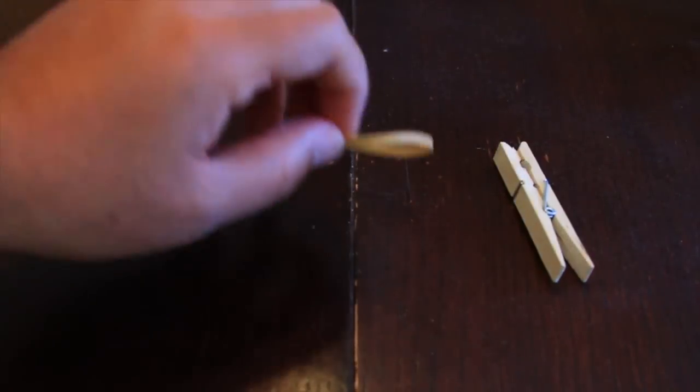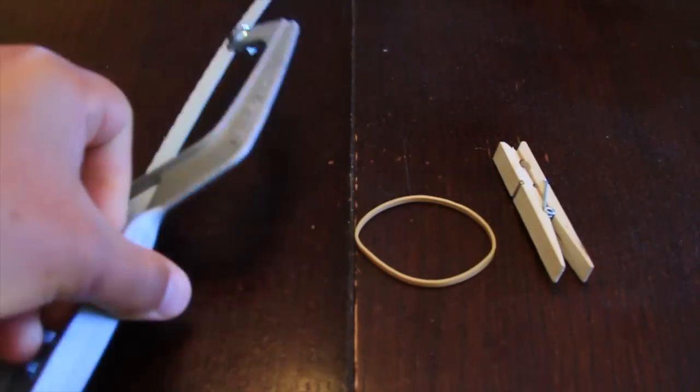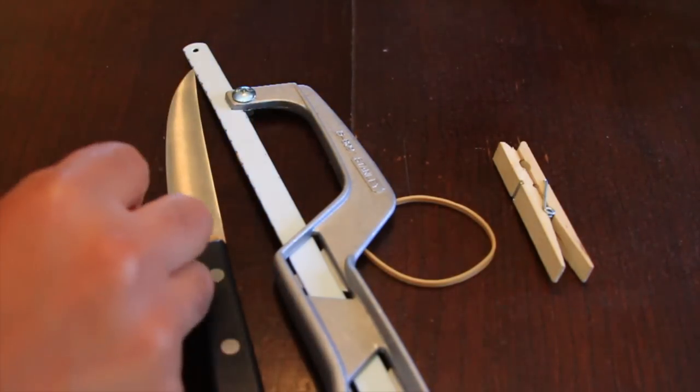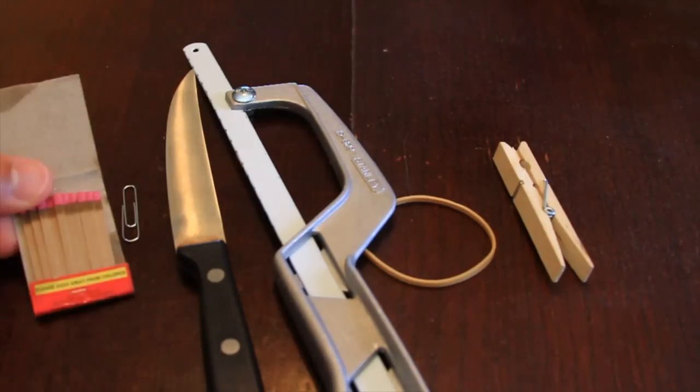First you need a clothespin, a rubber band, a little tiny saw or a knife that cuts through wood, a paper clip to serve as the bullet or matches to shoot fire, and a piece of cardboard to protect your foot.